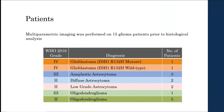Multiparametric imaging was performed on 15 glioma patients prior to physiological analysis. In the table, patients are color-coded by diagnosis. In all, there were nine grade two patients, four grade three patients, and two grade four patients whose data were processed. Diagnosis and grading was based on the WHO 2016 criteria. For the grade four patients, one was IDH1 mutated and the other was IDH1 wild type, and our patient pool is heavily weighted toward grade two.